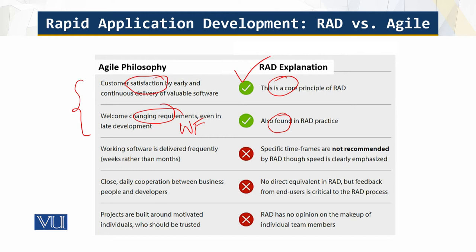But if you look at setting a deadline — weeks rather than months in Agile — in the context of RAD, there are no specific time frames recommended. Also, Agile calls for close daily cooperation between business people and developers. In RAD, feedback is required, but it is not critical that it be daily or hourly. So these are differences between RAD and Agile.